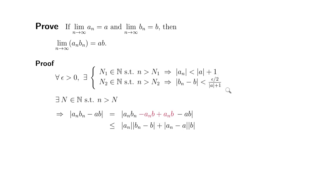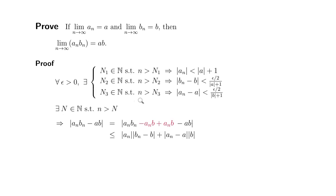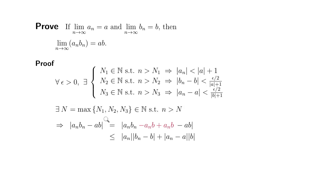That can be any positive number, so we chose that, and you can conveniently cancel those. Since aₙ still converges to a, we can also say there exists capital N3, which is a natural number, such that as long as n is greater than capital N3, we can make sure that the absolute value of aₙ minus a is less than epsilon over 2 divided by absolute value of b plus 1. In order to use all three inequalities, capital N has to be the largest of the three, so there exists capital N equal to the maximum of N1, N2, and N3, which is a natural number.